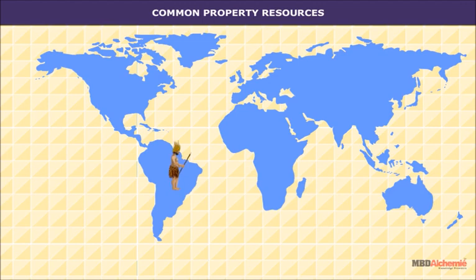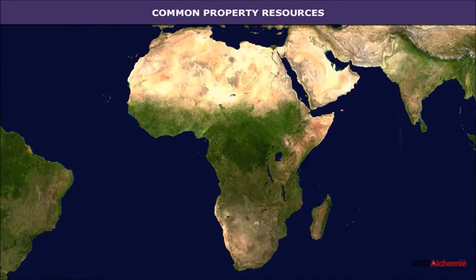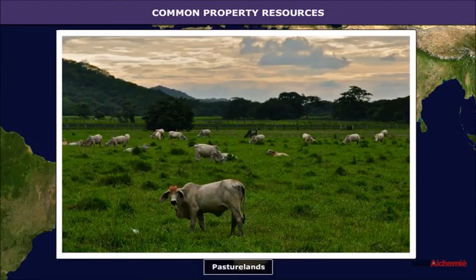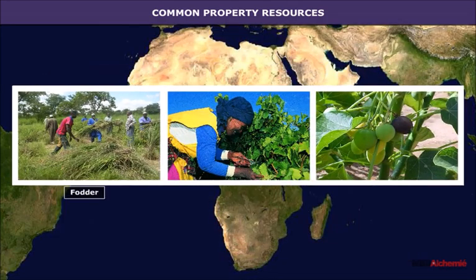Common property resources: Traditionally, Adivasis in India or tribals in other parts of the world consider land a community resource. In Africa, even today, many communities use pasture lands as a common resource for grazing their domesticated animals. They even collect fodder, fruit and medicinal herbs for community use.